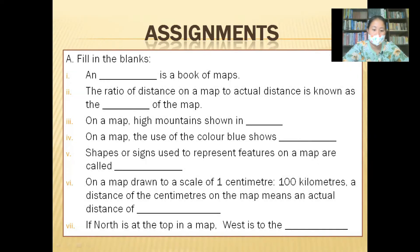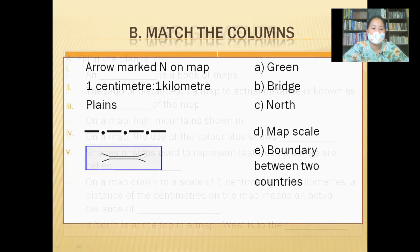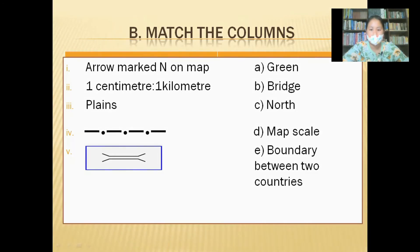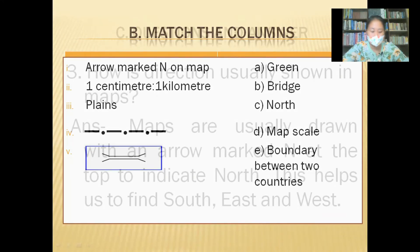Number seven, if north is at the top in a map, west is to the left. Section B, match the columns: An arrow mark on a map indicates north. One centimeter to one kilometer represents the map scale. Plains are shown in green. A dash-dot symbol represents a boundary between two countries. Another symbol represents a bridge.